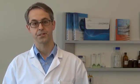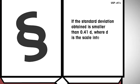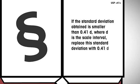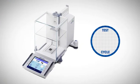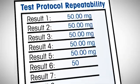This change was pretty straightforward. Here comes something new, a lower limit for the repeatability test. If the standard deviation obtained is smaller than 0.41d, where d is the scale interval, replace this standard deviation with 0.41d. So in case the standard deviation is 0, or just very small, the readability of the balance is not high enough to detect deviations.